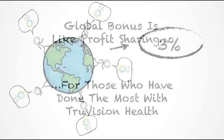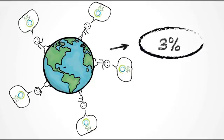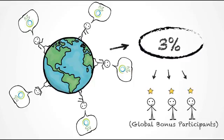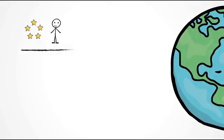It essentially grants a profit-sharing type feature to those who have contributed the most to the growth of the company. It does this by setting aside 3% of worldwide sales revenue and dividing it among associates who are qualified for shares in that pool. Once an associate reaches the rank of 5-star, they will be granted one share in the global bonus pool.